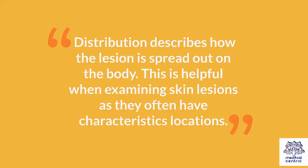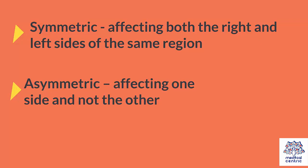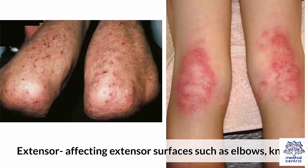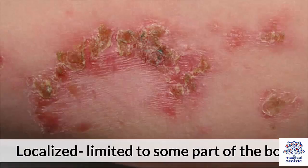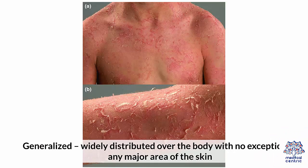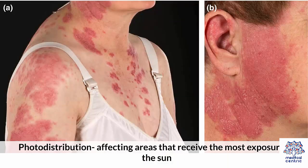Distribution describes how the lesion is spread out on the body, and is helpful when examining skin lesions as they often have characteristic locations. Symmetric — affecting both the right and left sides of the same region. Asymmetric — affecting one side and not the other. Extensor — affecting extensor surfaces such as elbows and knees. Flexoral — involving skin flexures. Localized — limited to some part of the body. Generalized — widely distributed over the body with no exception of any major area of the skin. Photodistribution — affecting areas that receive the most exposure to the sun.